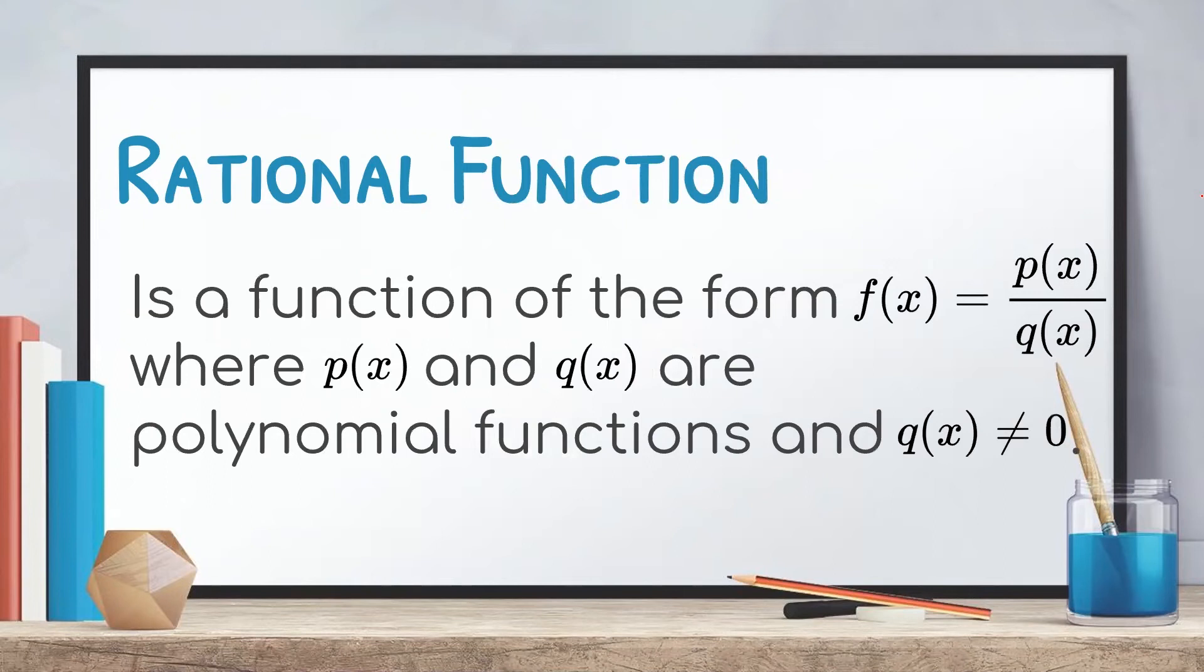Finally, rational function is a function of the form f of x equals p of x over q of x, where p of x and q of x are polynomial functions and q of x cannot be equal to 0. For you to have a rational function, f of x, or y would be your key.